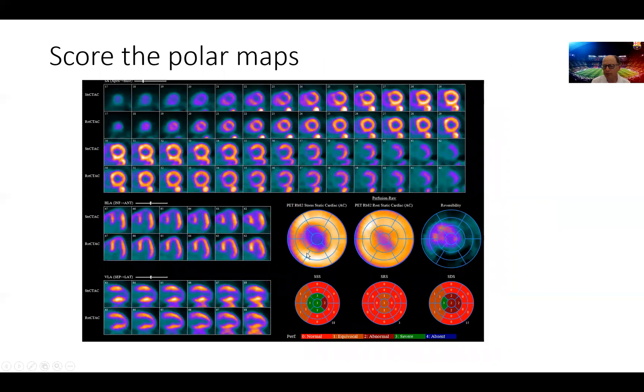We go to give a meaning to these observations on a 17 segment model. So here we can see this minor or minimal perfusion defect in the apex in the rest images in the 17 segment plot.